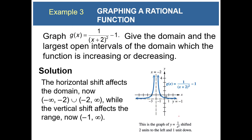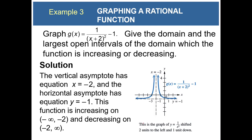The horizontal shifts affect the domain, now from negative infinity to negative two union negative two to infinity, while the vertical shift affects the range, now from negative one to infinity. This function is increasing on negative infinity to negative two and increasing on negative two to infinity.